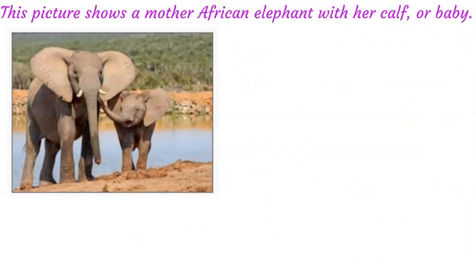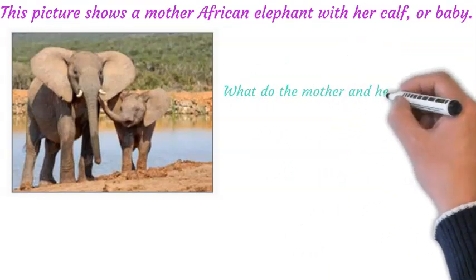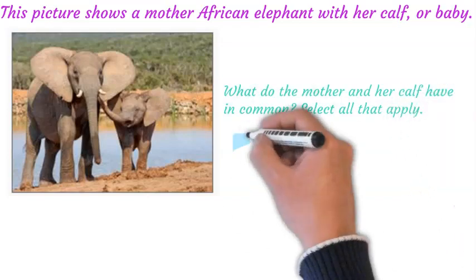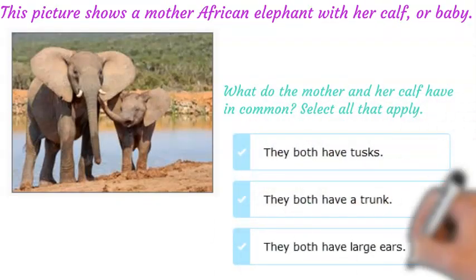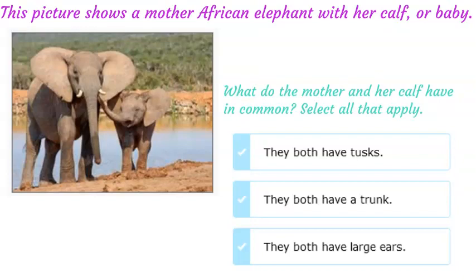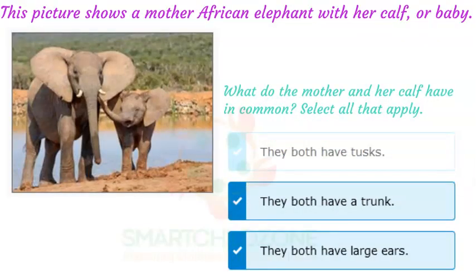This picture shows a mother African elephant with her calf, or baby. What do the mother and her calf have in common? The mother African elephant has tusks, but her calf does not — the calf will grow tusks as it gets older. They both have a trunk; African elephants use their trunks to pick up food and to communicate by touching each other. They both have large ears; an elephant can flap its ears to make a breeze and keep cool.